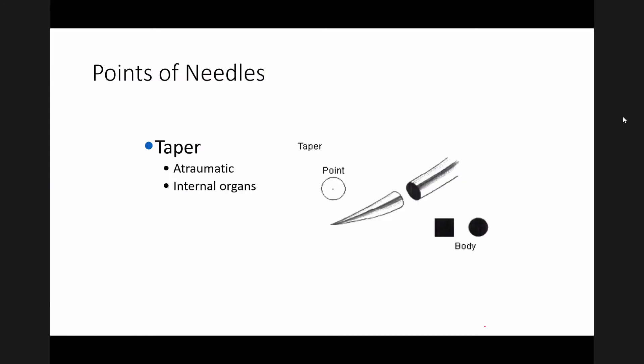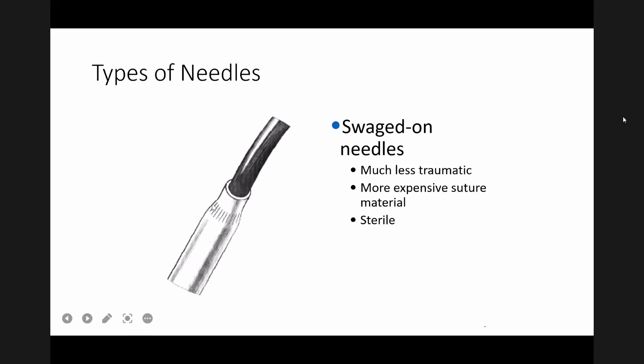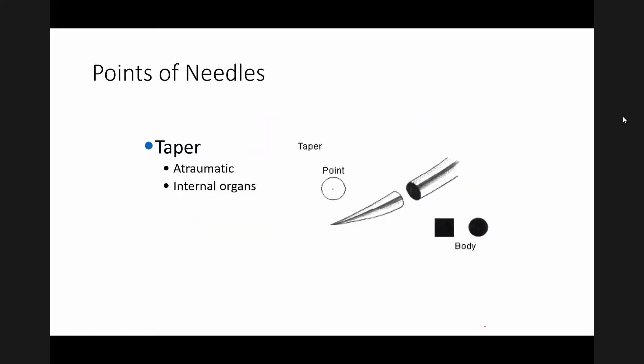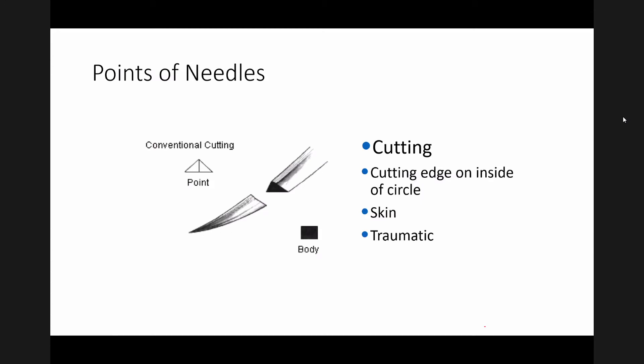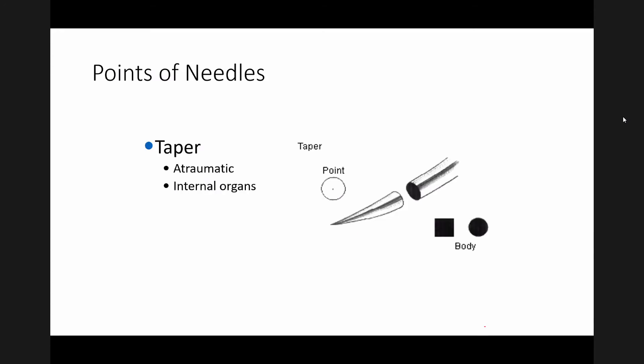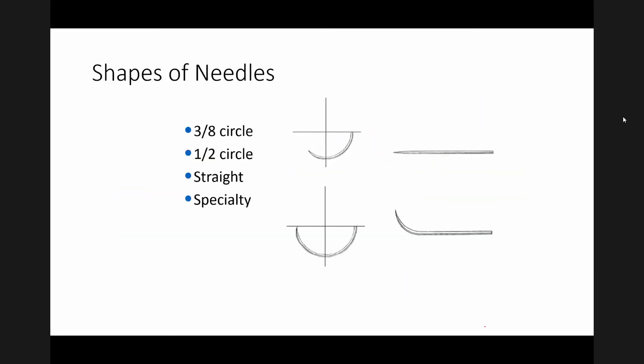During manufacture, the same suture material can be combined with different types of needles. We choose the needle-suture combination based upon the tissue we are going to apply it to. For tough structures like skin, fascia, and tendons, cutting needles are needed. For bowel anastomosis, non-cutting or round body needles should be used. Needles can be three-eighths of a circle, half circle, straight, or J-shaped depending on the tissue and area of surgery.